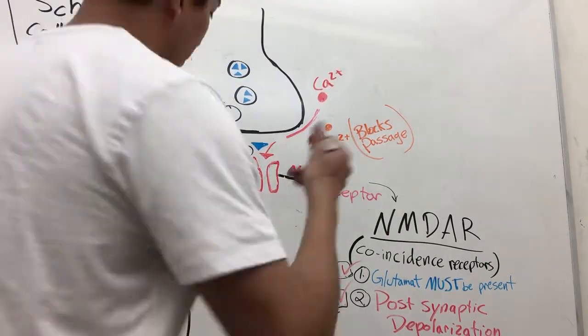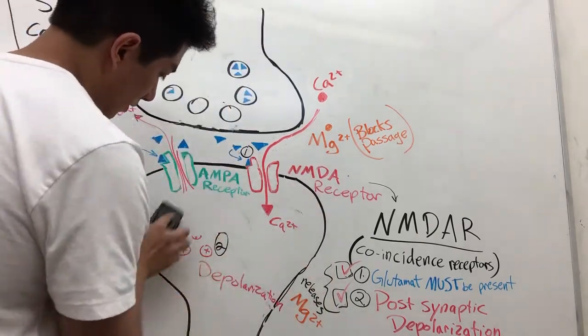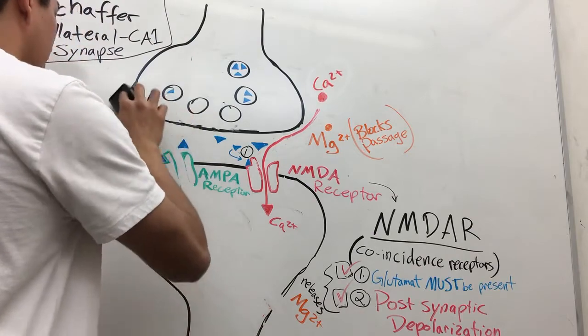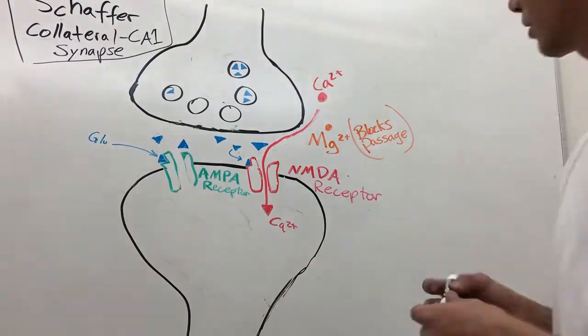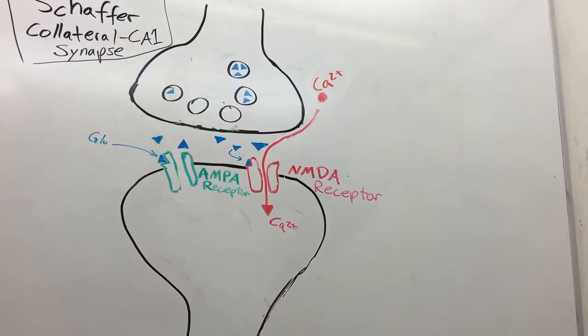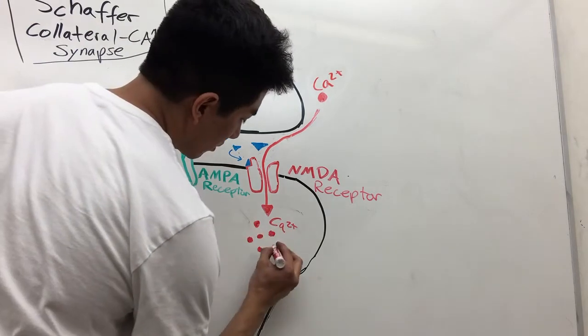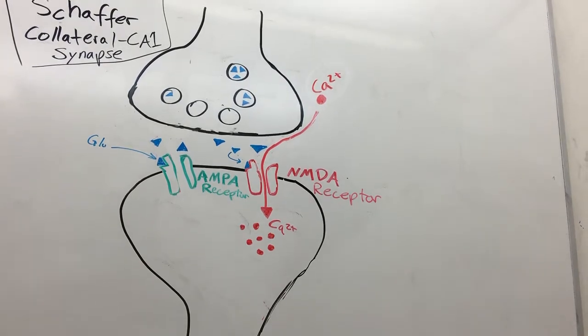Now that calcium is entering the neuron, we can get a lot of things happening. Calcium will start second messenger cascades to bring more AMPA receptors up into the neuron synapse. Calcium can also act as a retrograde signal that goes back to the presynaptic neuron and creates even more vesicles and neurotransmitters. It can even change the receptors on the presynaptic neuron to allow for more current to enter through.